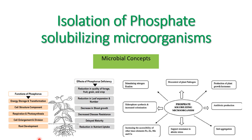Why do we need phosphate solubilizing microbes? The role of phosphate solubilizing microbes is they convert the insoluble phosphate into the soluble one, which makes it available for plants. What are the functions of phosphorus? Energy storage, transformation, cell structure components, respiration, photosynthesis, cell enlargement and division, and root development.